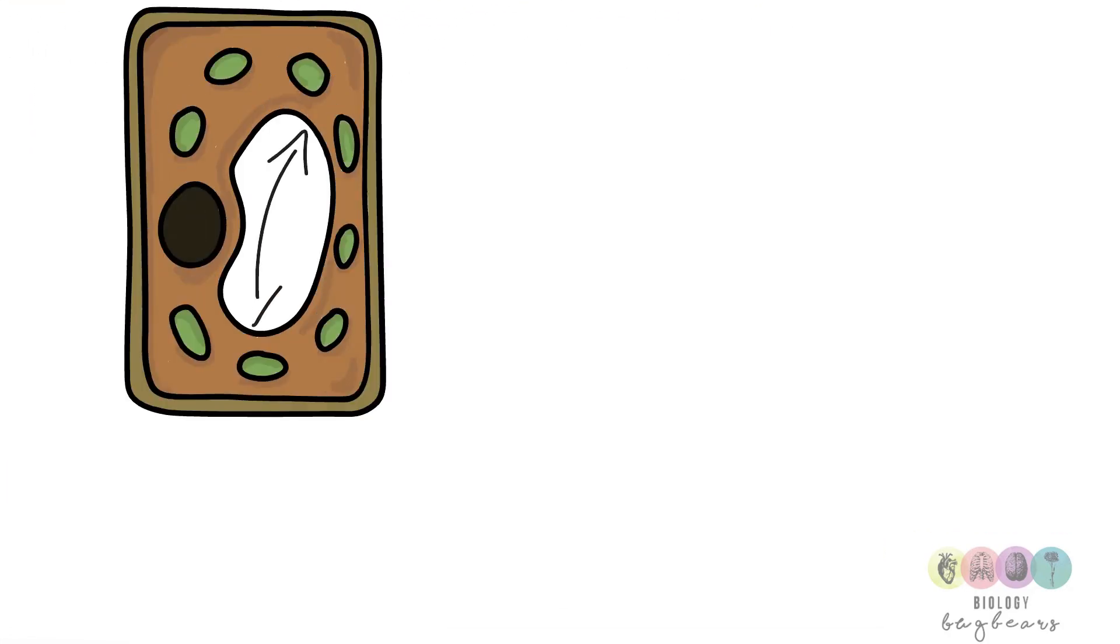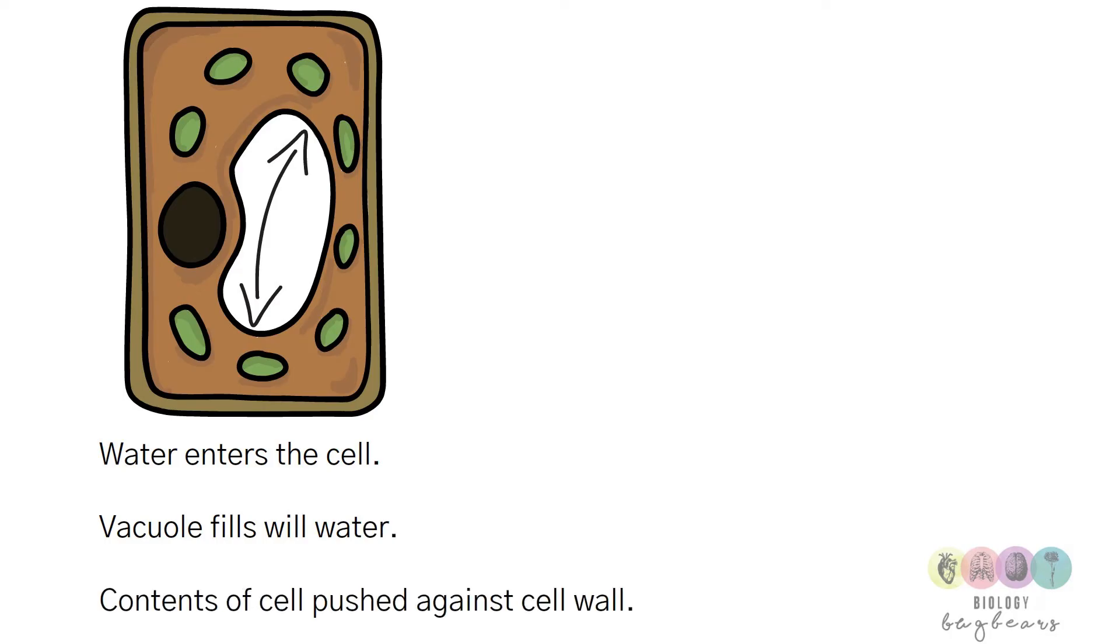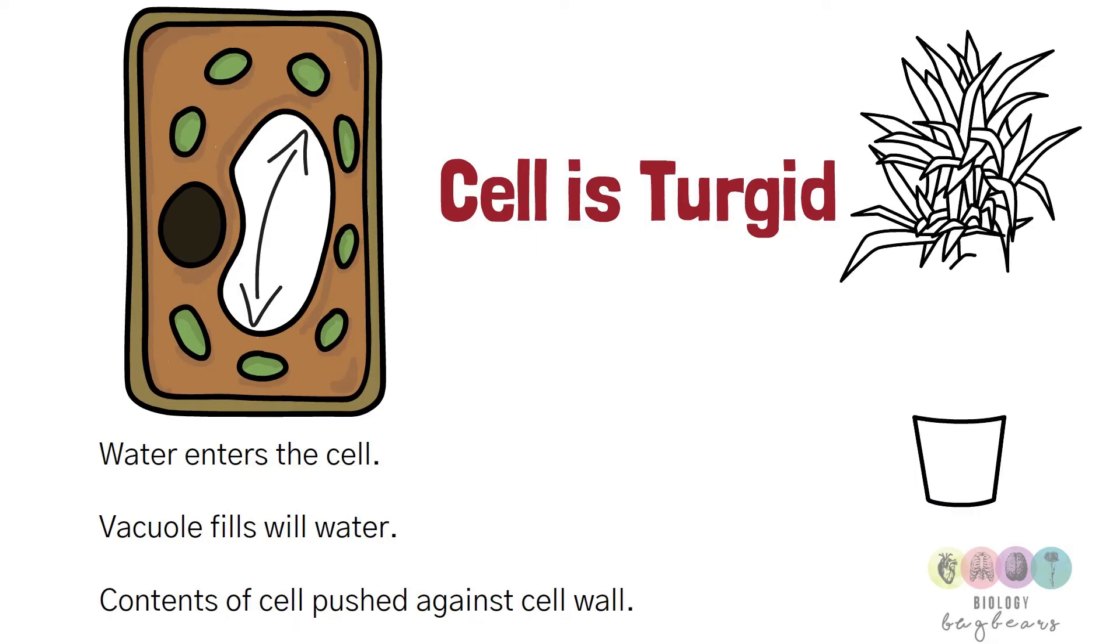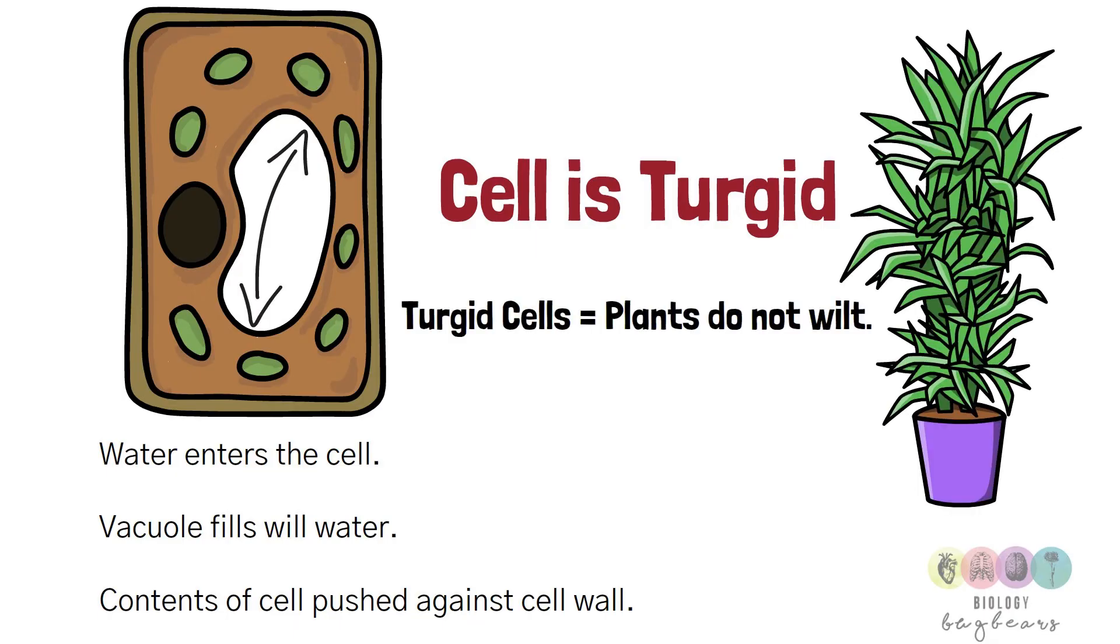Water moves into the cells, into the cytoplasm, and then into the vacuole. The vacuole fills with water and the contents of the cell are pushed against the cell wall. The cell is said to be turgid. When all the cells are turgid, the plants will not wilt.